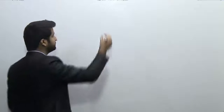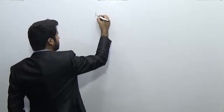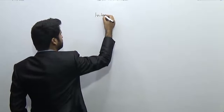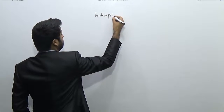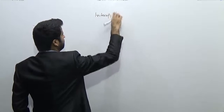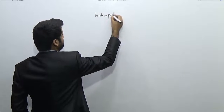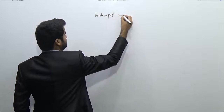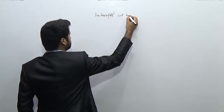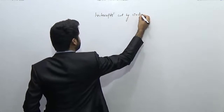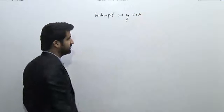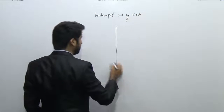Let's see a new concept of intercepts — intercepts cut by the circle. Now what do I mean by intercept cut by a circle? Let's see.